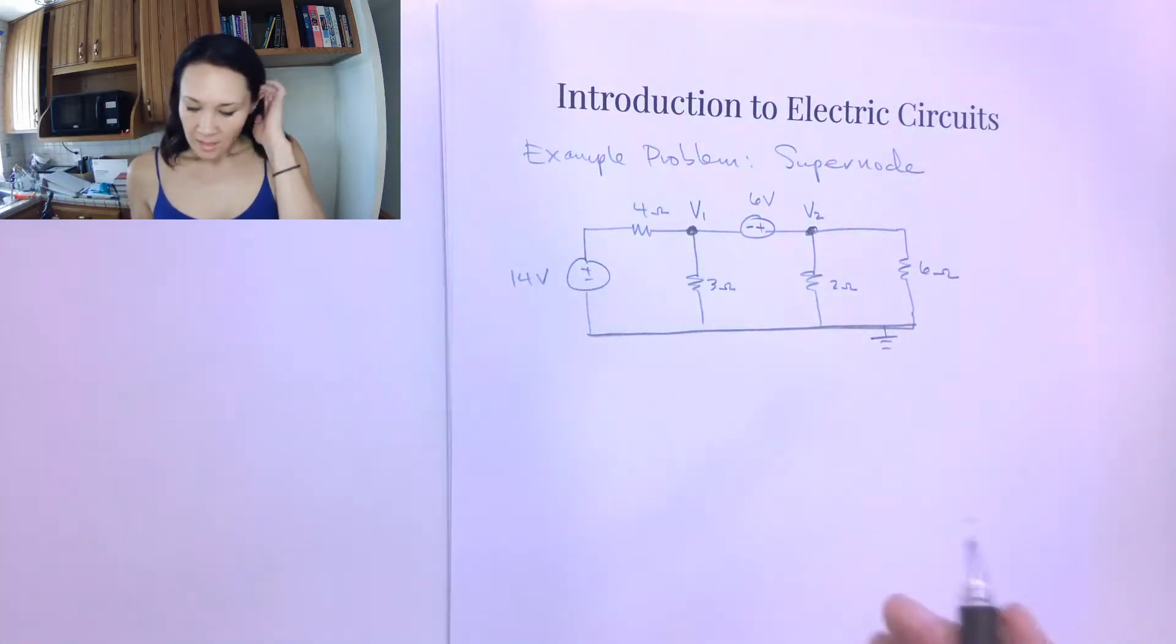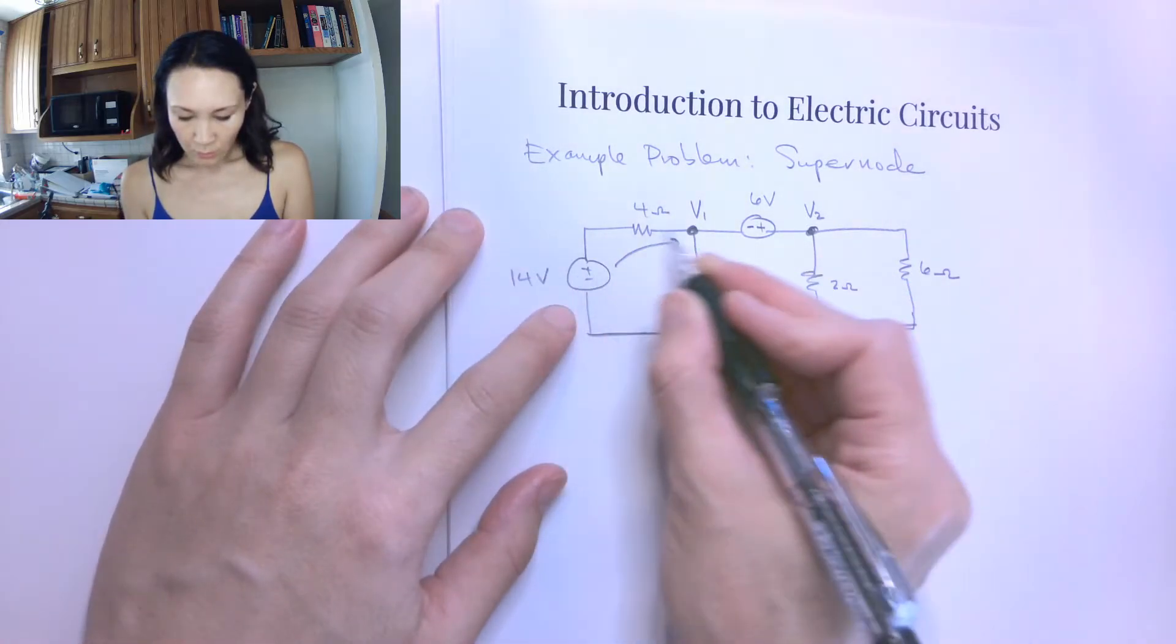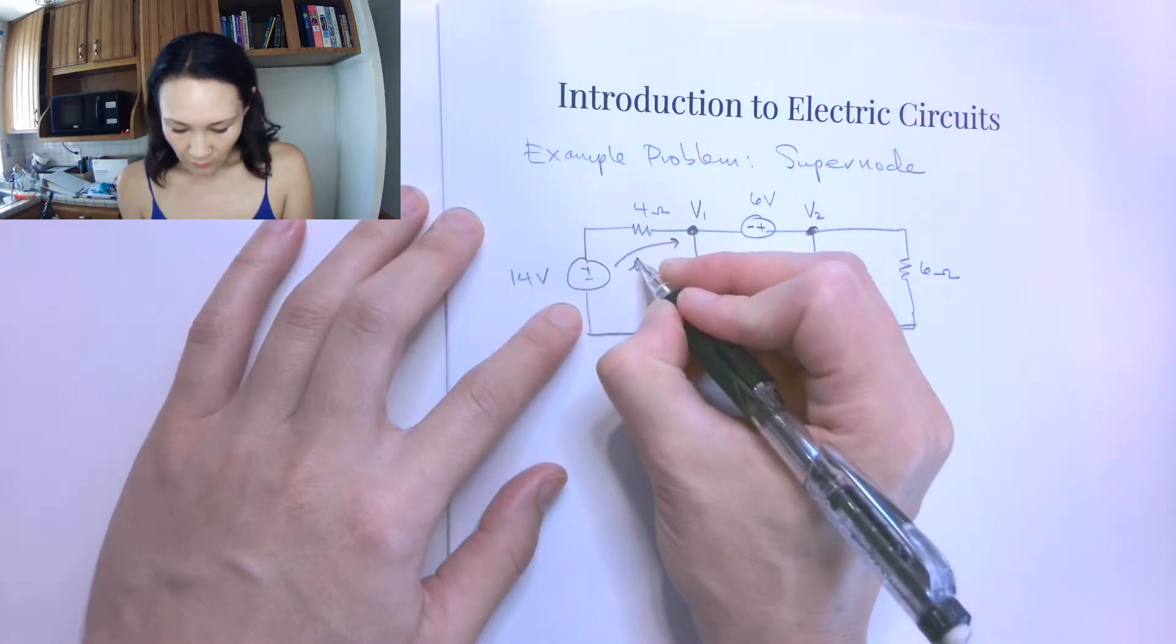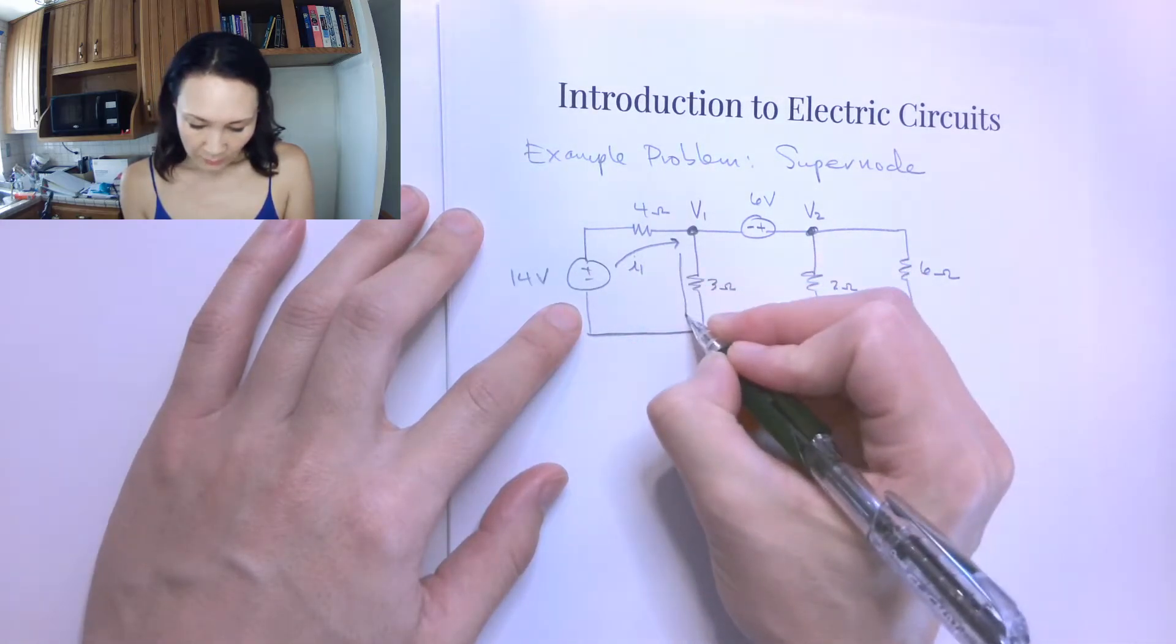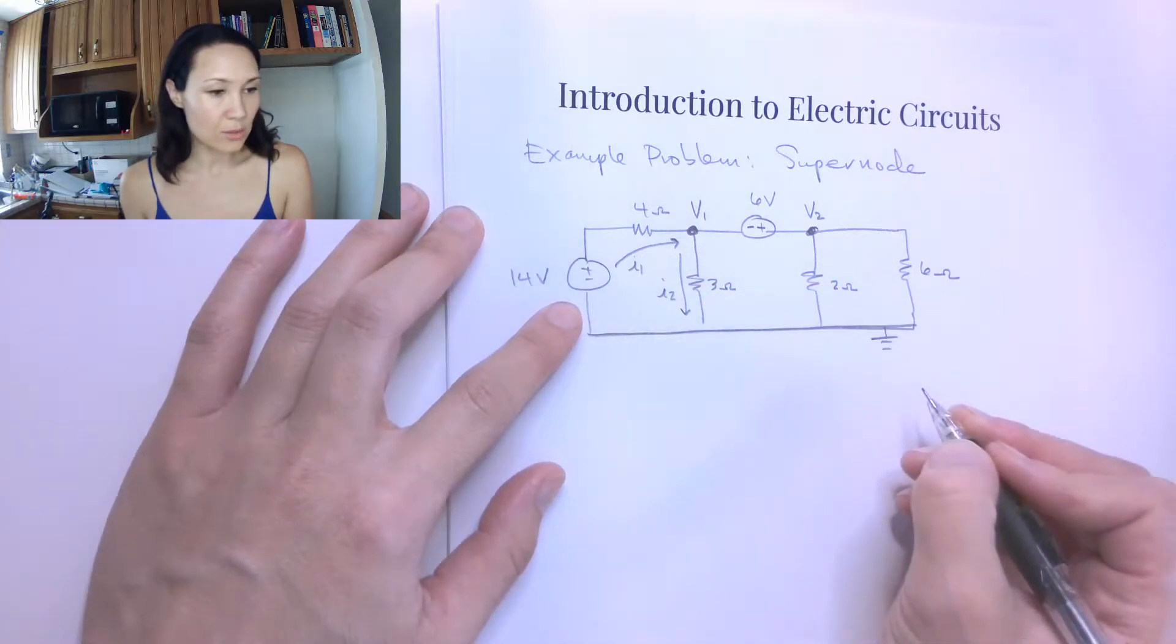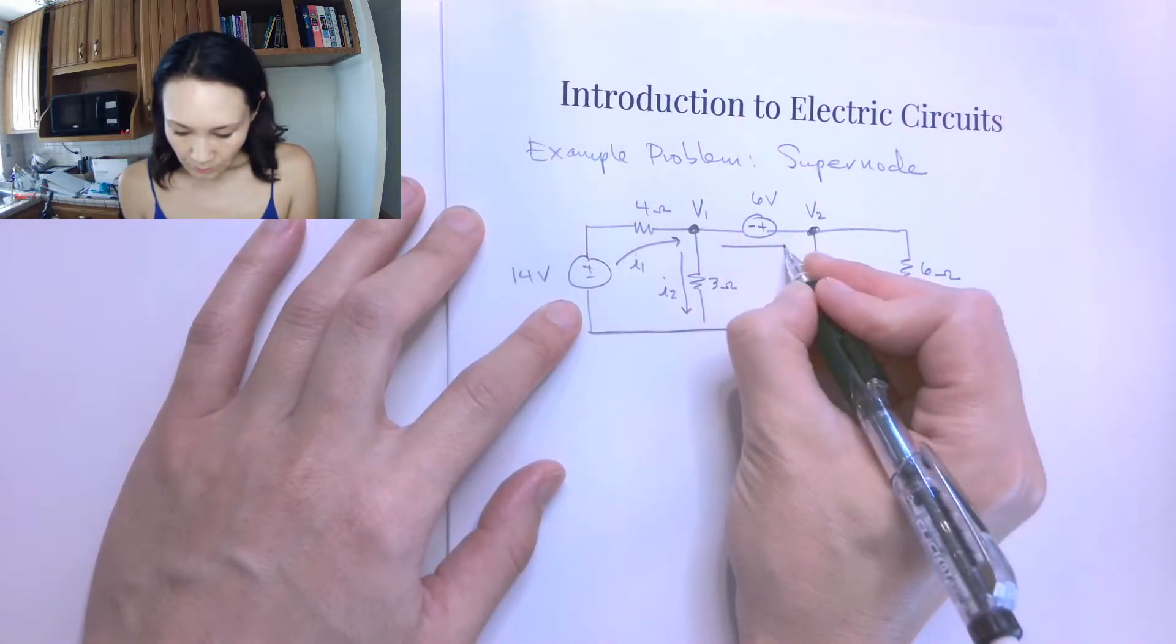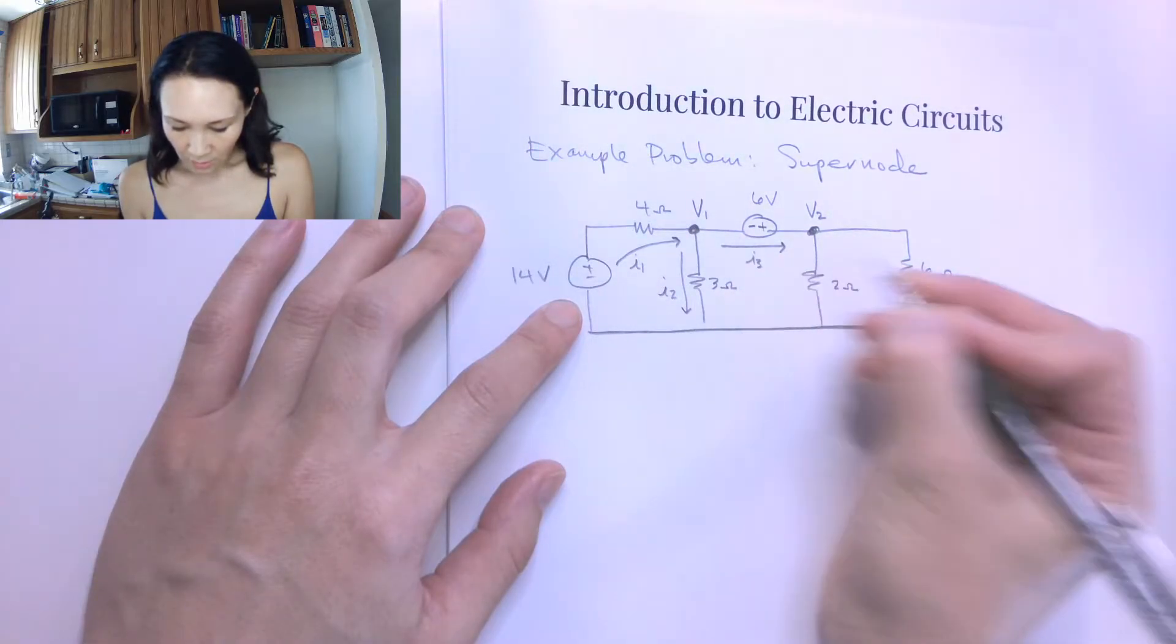And then let me write all my currents at all the nodes. I'm going to assume that we have a current that originates from this 14 volt source. I'll label this I1. There'll be some current that takes the path through this 3 ohm resistor. I'll call that I2. The current that comes over here through this source, I'll call this I3.